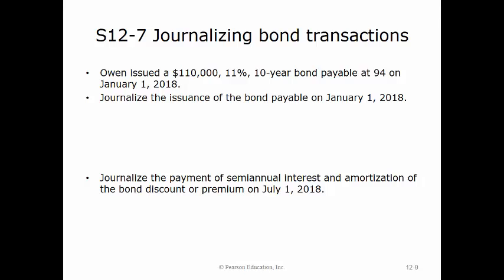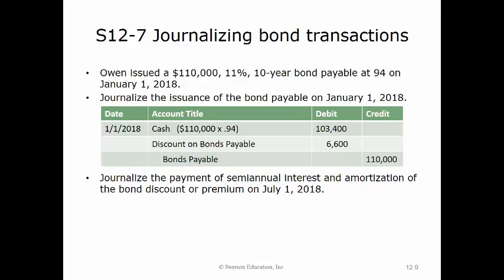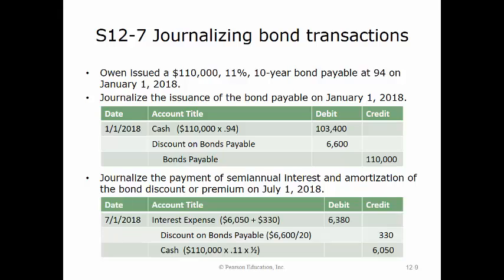Inoah issued a $110,000, 11%, ten-year bond payable at 94 on January 1st, 2018. To journalize the issuance, we debit cash for $103,400 (equal to $110,000 times 94%), debit discount on bonds payable for $6,600 (the difference between $110,000 and $103,400), and credit bonds payable for $110,000. To journalize the semi-annual interest on July 1st, 2018, we debit interest expense for $6,380.